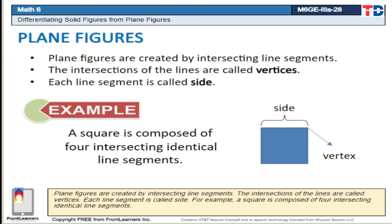Plane figures are created by intersecting line segments. The intersections of the lines are called vertices. Each line segment is called a side. For example, a square is composed of four intersecting identical line segments.